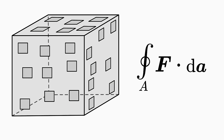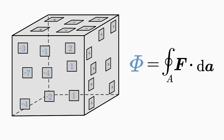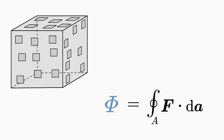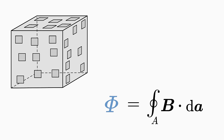If, as in this case, the integrand is a vector field, this surface integral is called the flux Φ of the vector field F through the surface A. It measures how much of the vector field F flows out of or flows into a considered surface A. If the vector field F is an electric field E, then this surface integral is called electric flux through the surface A. And if the vector field F is a magnetic field B, the surface integral is called magnetic flux through the surface A.